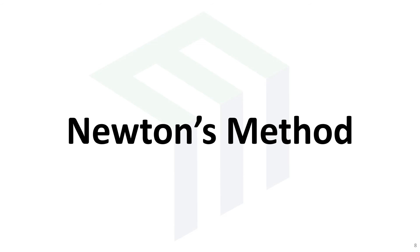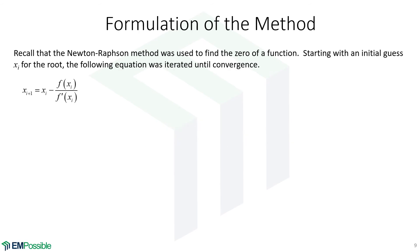Newton's method. When we were talking about root finding, we covered the Newton-Raphson method. And so we started with some initial guess, x sub i, and we iterated the function divided by its derivative. We kept subtracting that each time. And we iterated and we found a root. A root is where that function equals zero.